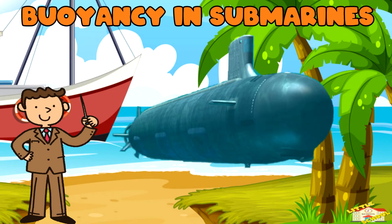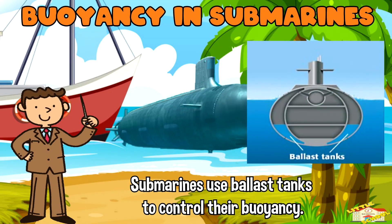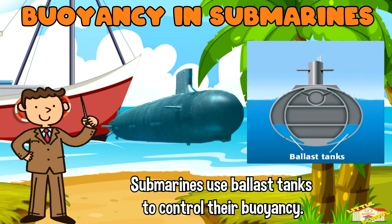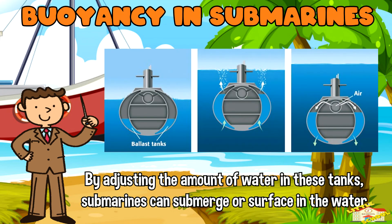Buoyancy in Submarines: Submarines use ballast tanks to control their buoyancy. By adjusting the amounts of water in these tanks, submarines can submerge or surface in the water.